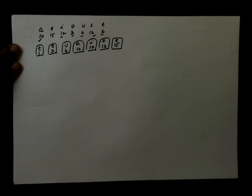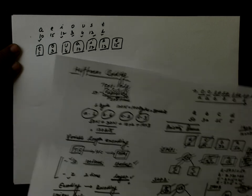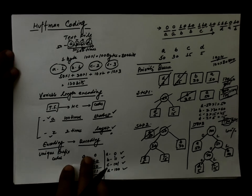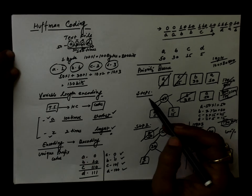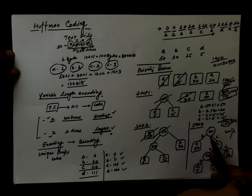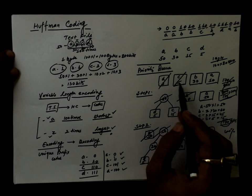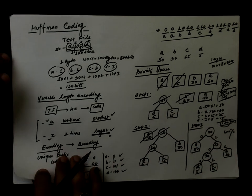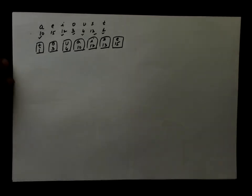If you observe the last example from the earlier video, it required 3 steps for 4 characters. So you required N minus 1 steps. If you have 7 characters, then you will require 6 steps.